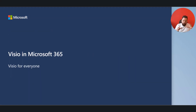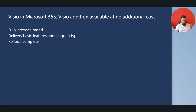The newcomer in the Visio plan world is Microsoft Visio in Microsoft 365, or as we call it, Visio for everyone. It is a Visio license added to every user in one of the specifically supported plans. It is fully browser-based and delivers basic features and diagram types. It's not meant for a regular Visio user, but for an organizational user who now and then needs to create a diagram.